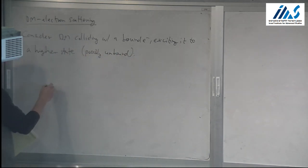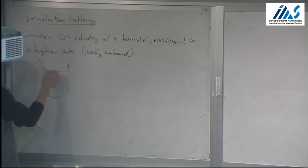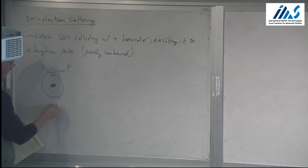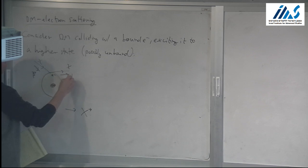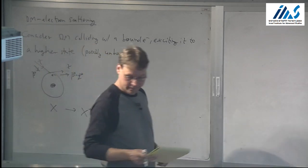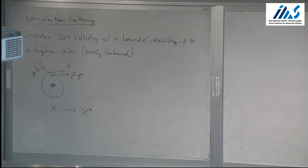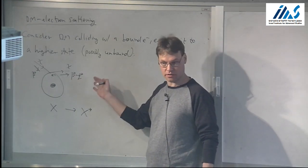The idea is that we have some system — here's the nucleus, there's an electron orbiting it. The dark matter chi comes in, scatters off the electron, and excites the electron to some higher state. So the system X goes to some excited state X*. There's some momentum coming in P, and some momentum going out P minus Q, where Q is the momentum lost by the dark matter.